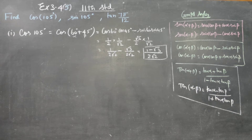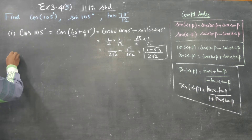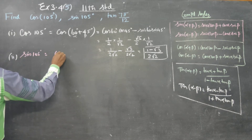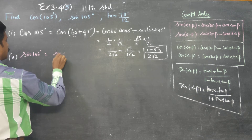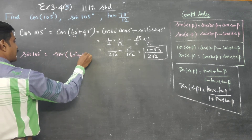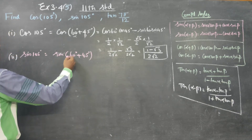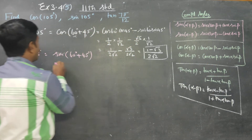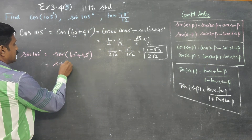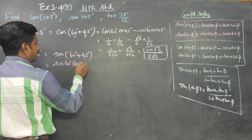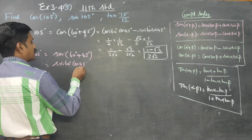Next, moving to sin 105°. Sin 105° can also be written as sin(60° + 45°). What is the sin(A + B) formula? Sin(α + β) = sinα·cosβ + cosα·sinβ. So we write: sin60·cos45 plus cos60·sin45.